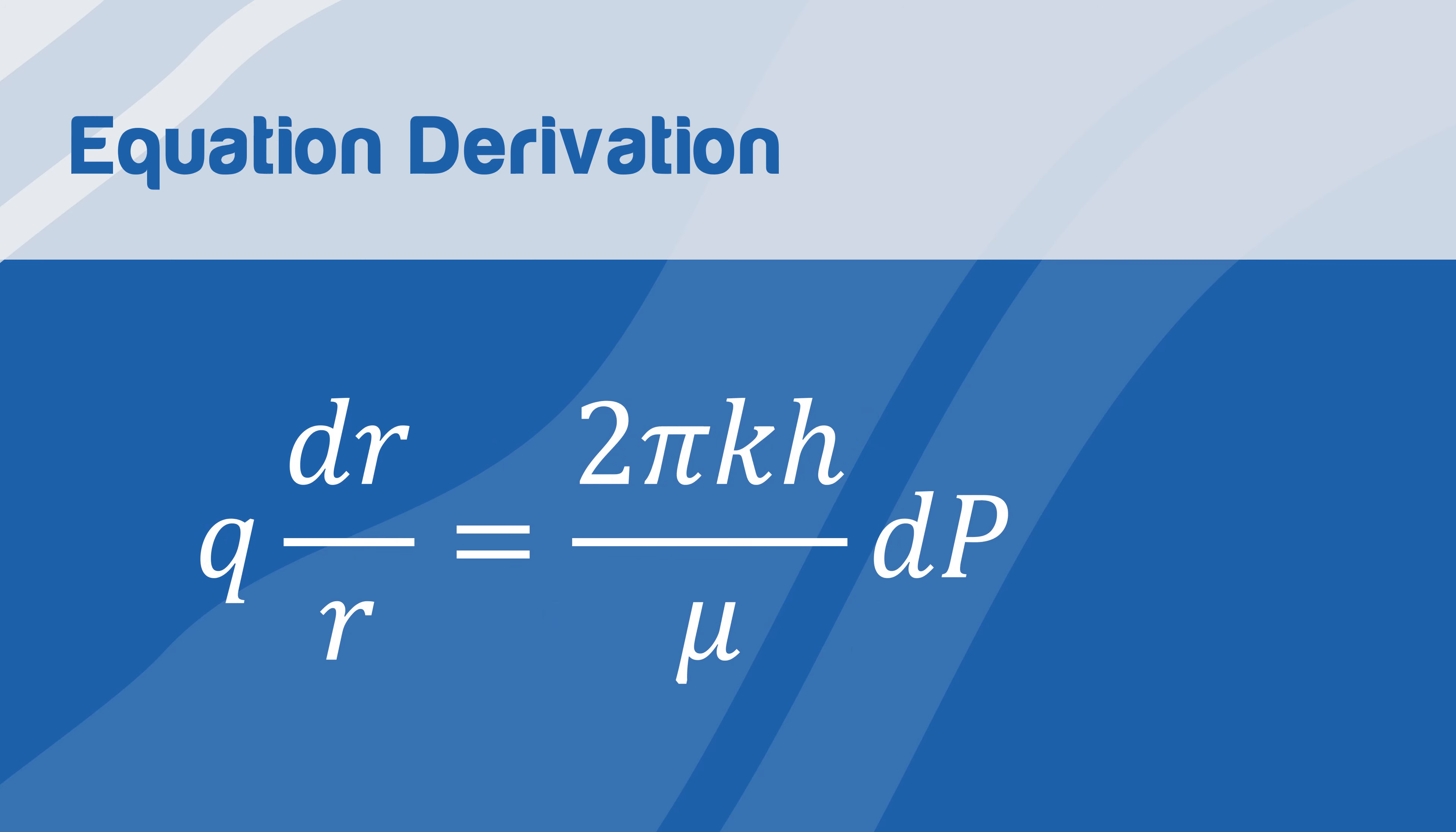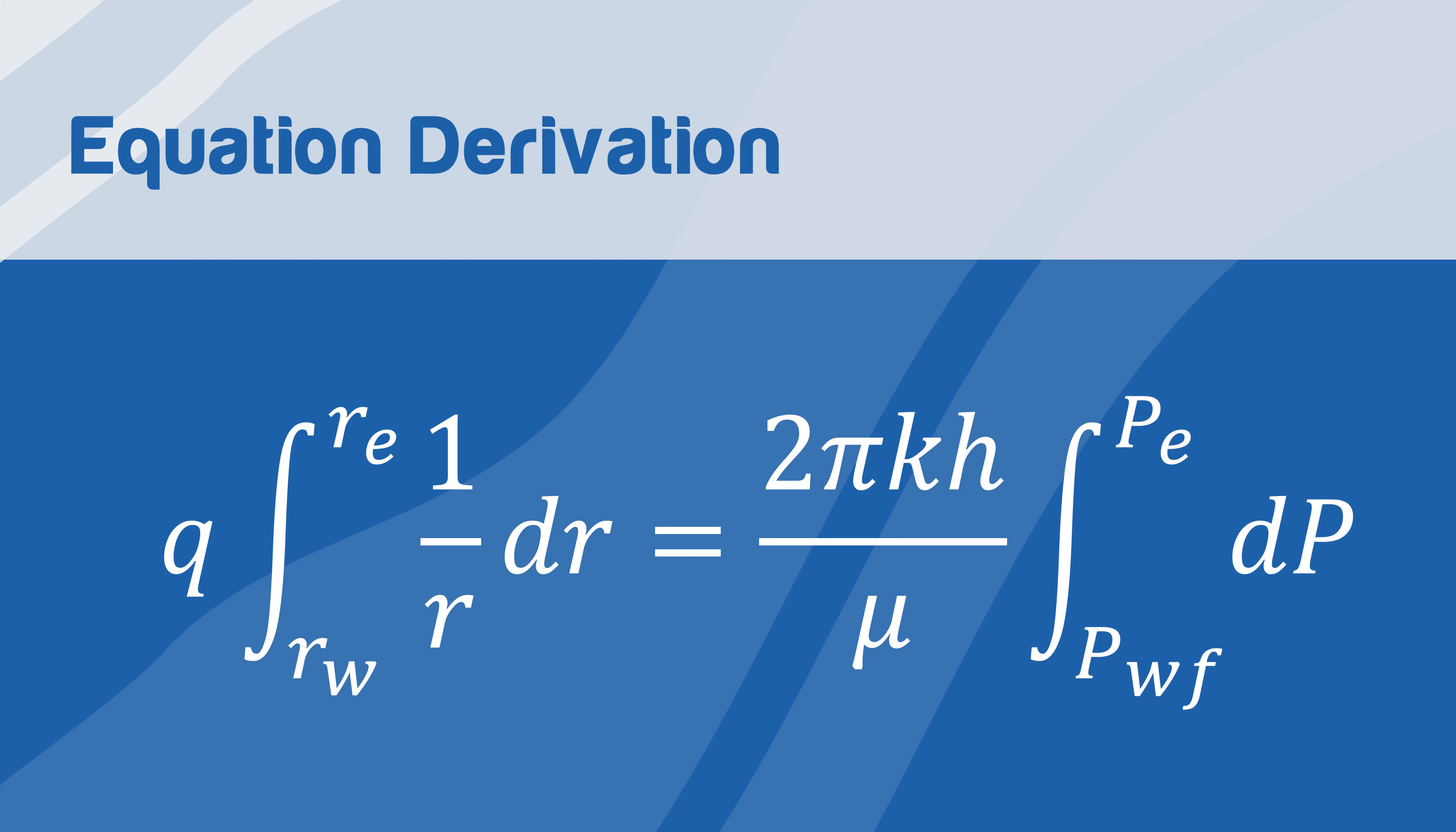Then, we rearrange the equation to obtain q dr over r equals 2πkh over μ delta p. Now we take the integral with the boundary limits in agreement with the system we showed before, thus obtaining the following equation.